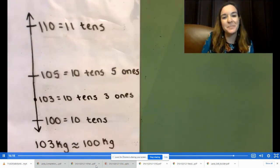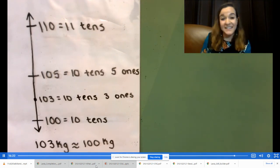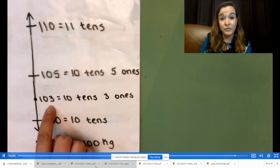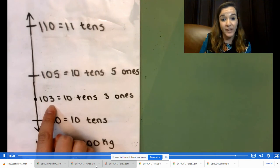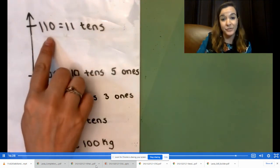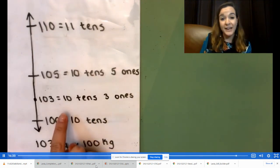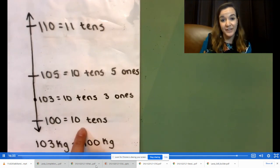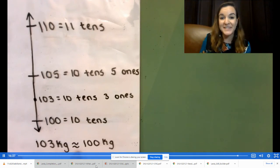Go ahead and check your work against my work. In this case, our number of 103 was less than halfway between 100 and 110. So I knew to round down to 100. So to complete my equation, 103 kilograms is about 100 kilograms. I think we're ready for our problem set now.